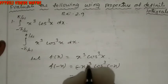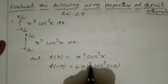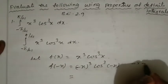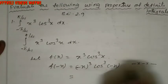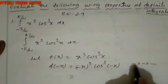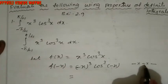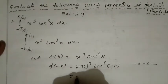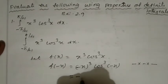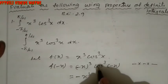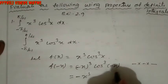For (minus x)³, since it is an odd power (cube), we multiply minus × minus × minus. Minus times minus is plus, and plus times minus is again minus. So (minus x)³ equals minus x³.